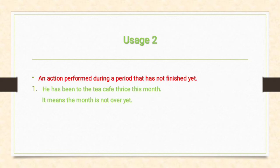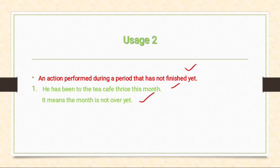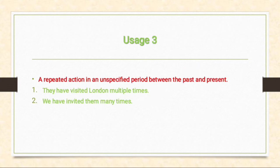Second usage of present perfect tense: we use present perfect tense for an action performed during a period that has not finished yet — meaning the period is not over yet. Third usage: we use present perfect tense for a repeated action in an unspecified period between the past and present. For example: 'They have visited London multiple times' and 'We have invited them many times.'